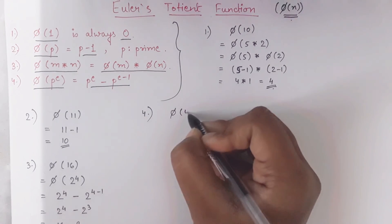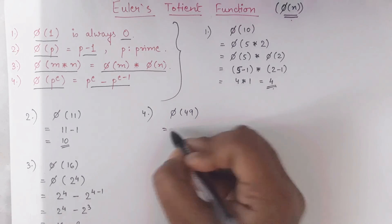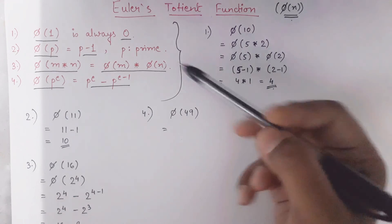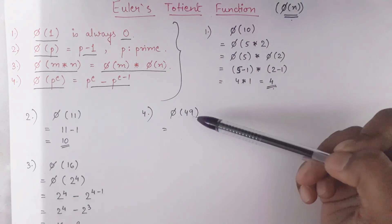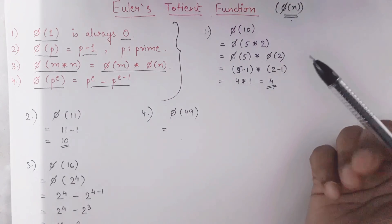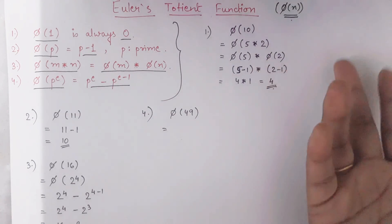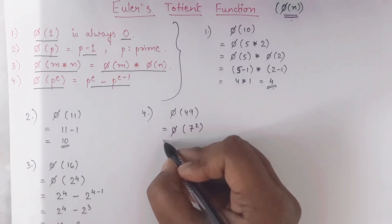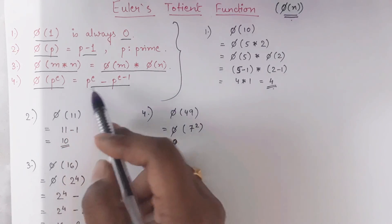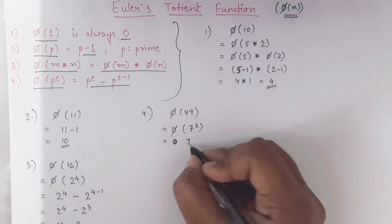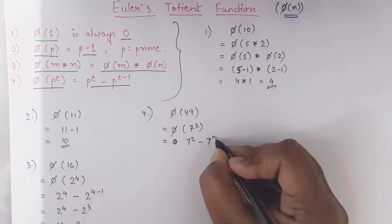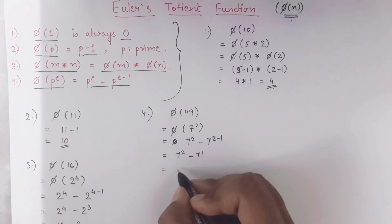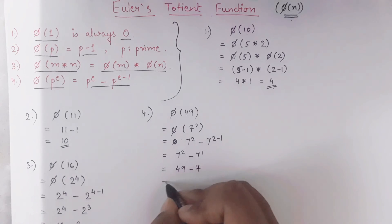Let us find phi of 49. First, is 49 prime? No — we know 7 times 7 is 49. So we check: can I convert 49 into the form of p raised to e? Yes, because 7 squared is 49. Applying the formula phi of p raised to e equals p raised to e minus p raised to e minus 1: that is 7 squared minus 7 raised to 1, which is 49 minus 7, equal to 42.